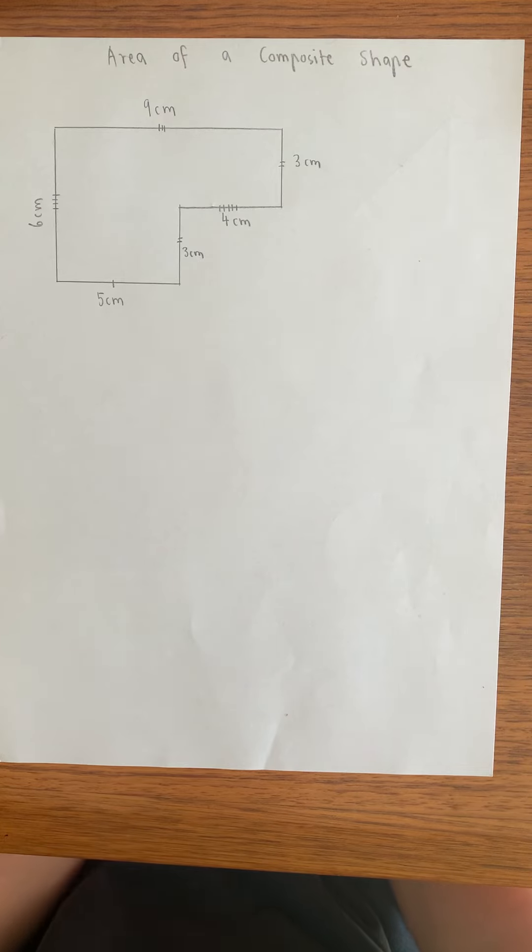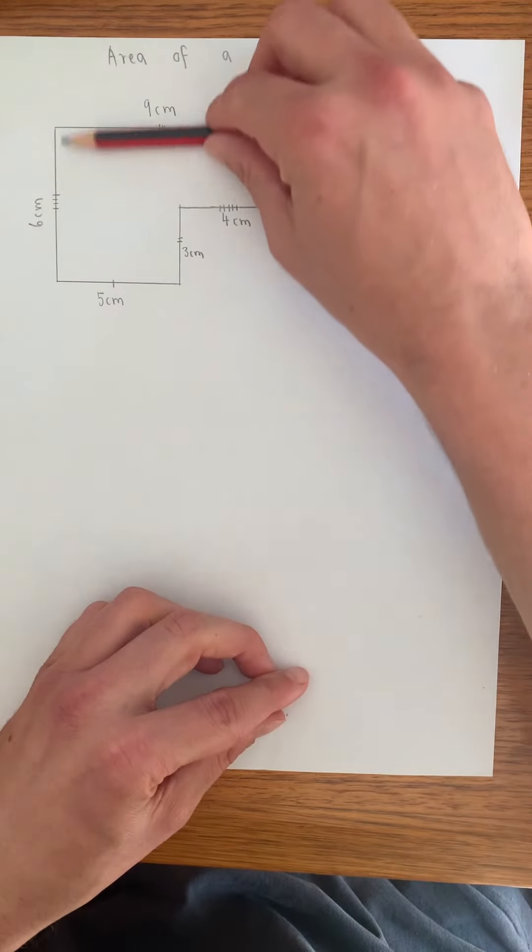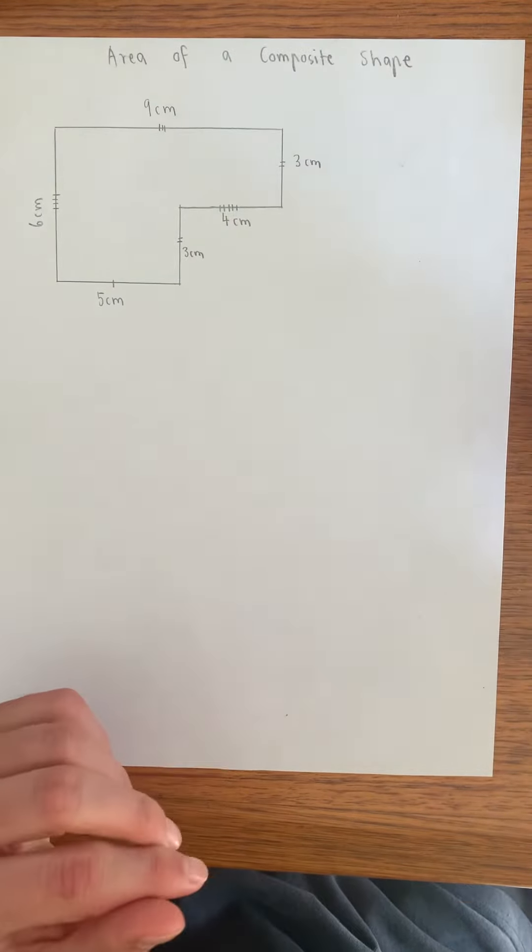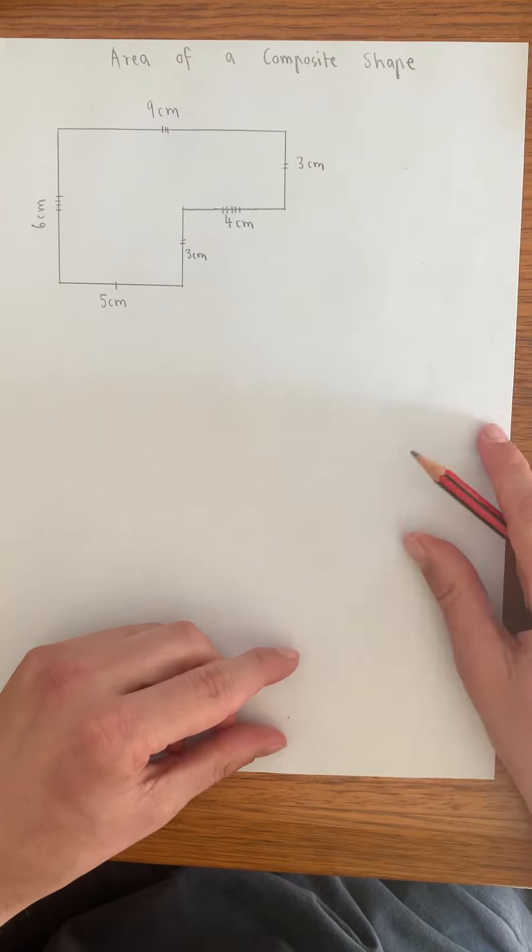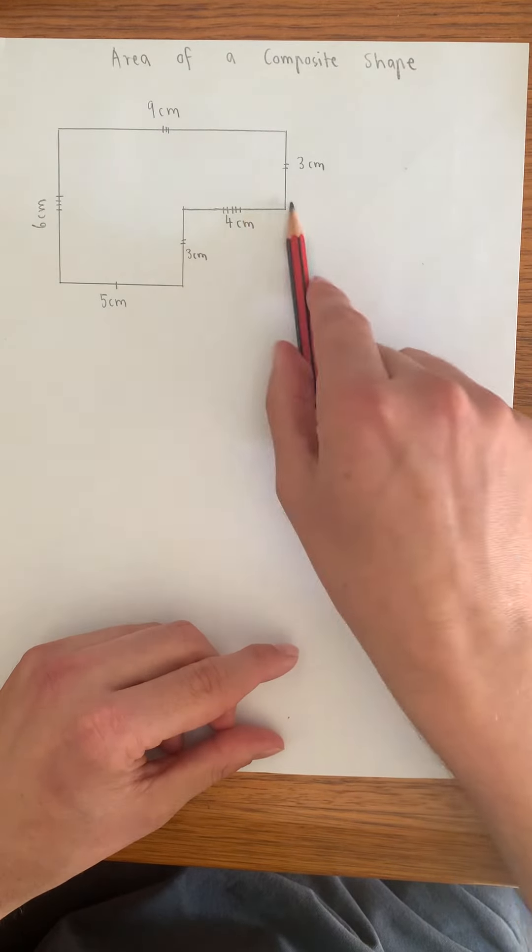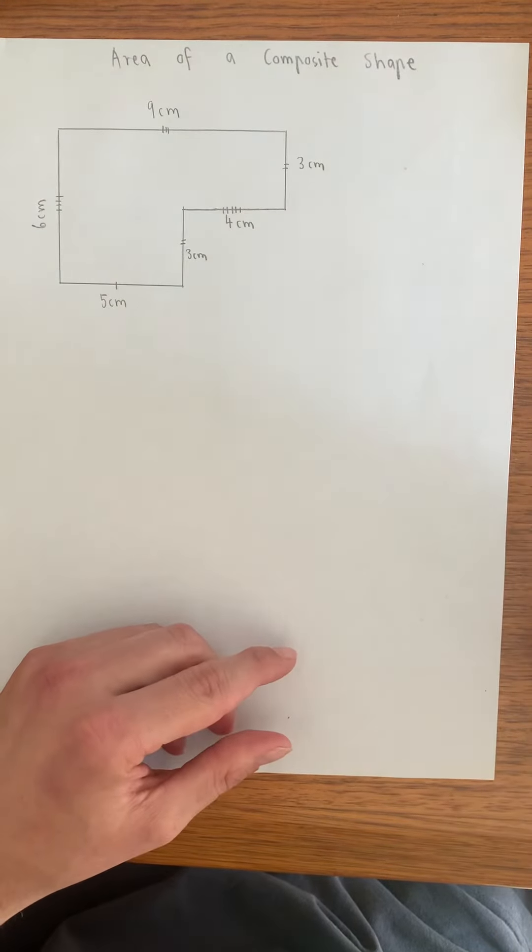With a rectangle, you'd have two sides of the same lengths and two that are of a different length. But as you can see with this example of a composite shape, they're kind of like shapes where there's almost like two rectangles put together, which is what this one's got, and it means it's got different dimensions along its sides.